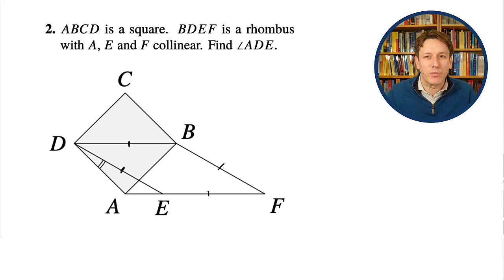So the first thing to do in this sort of problem is just to label any angles that we definitely know. I can see for sure that I've got right angles in the square, so I could label all of those.